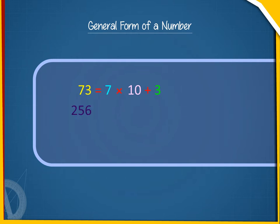256 equals 2 into 100 plus 5 into 10 plus 6. 3073 equals 3 into 1000 plus 0 into 100 plus 7 into 10 plus 3.